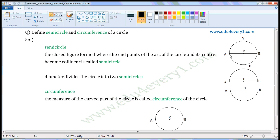So, A, O, B divides this circle into two equal parts. And each part is a semicircle. We can see it here. This is a semicircle and this is a semicircle.